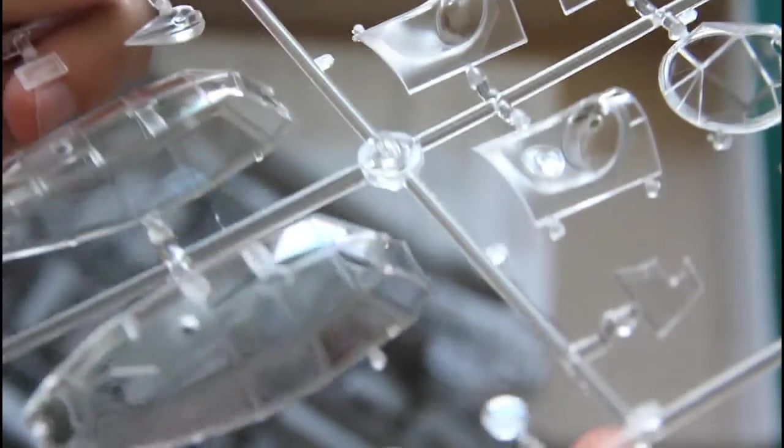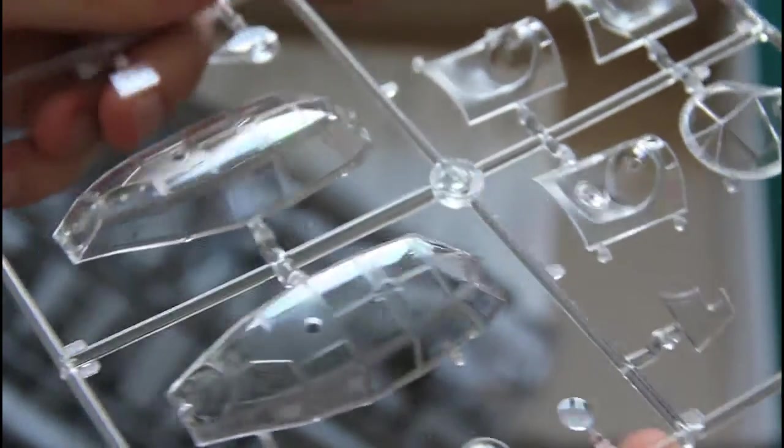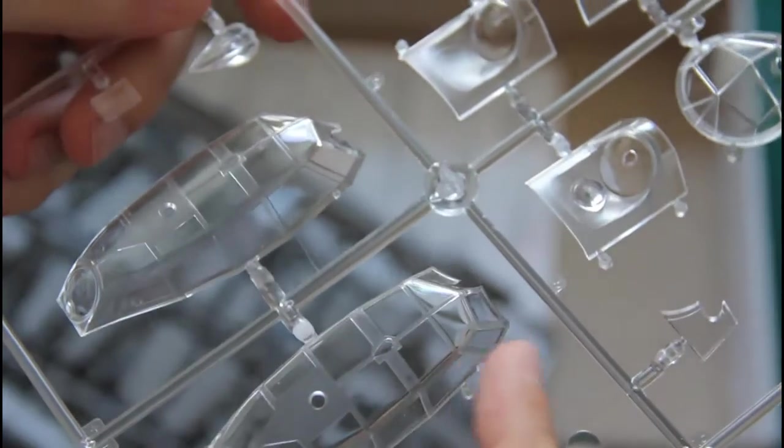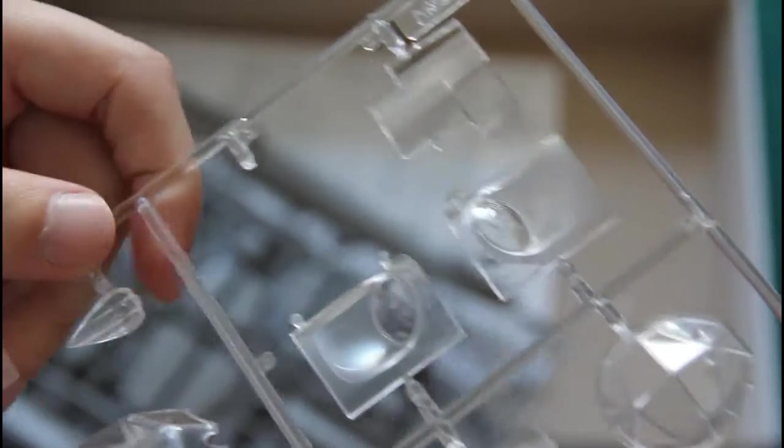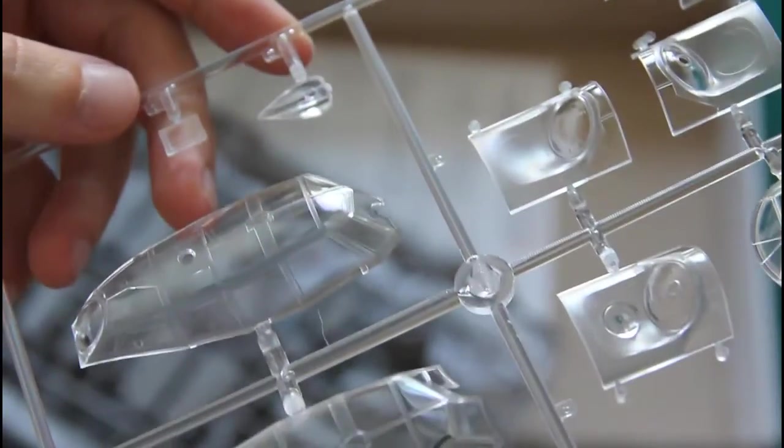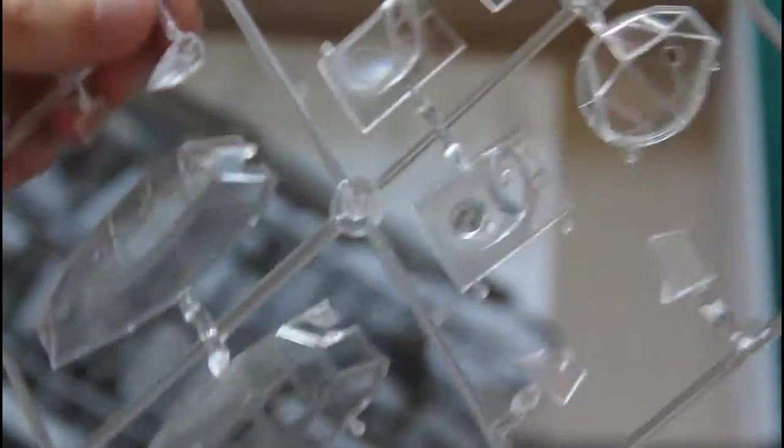Then we have the transparent sprue, which is quite nice. We have here two types of canopy. Moreover they are molded as one piece as you can see here, and some other transparent parts. Of course you would need masks for those but I have no doubt that those will be available a bit later.